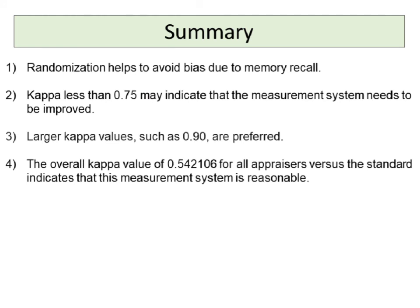In summary, randomization helps to avoid bias due to memory recall. Kappa less than 0.75 may indicate that the measurement system needs to be improved. Larger kappa values such as 0.90 are preferred. The overall kappa value of 0.542106 for all appraisers versus the standard indicates that this measurement system needs improvement.